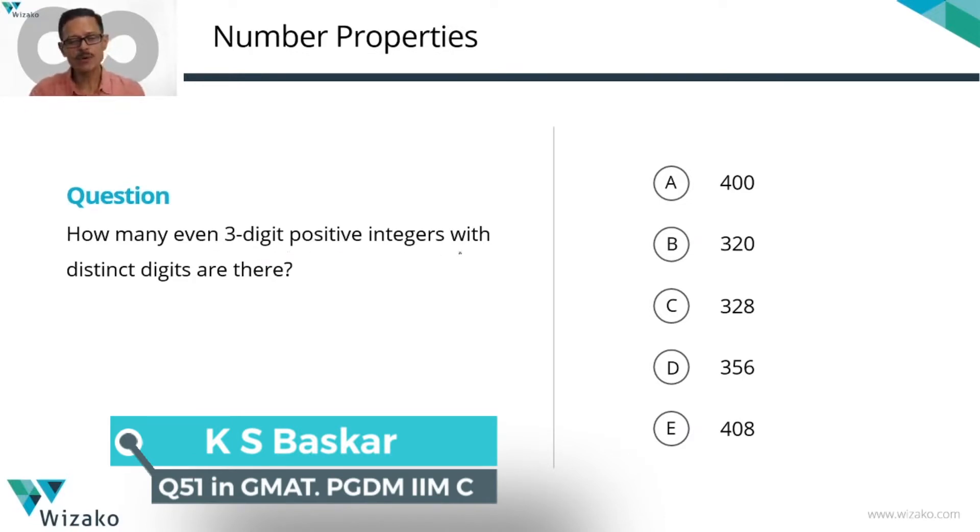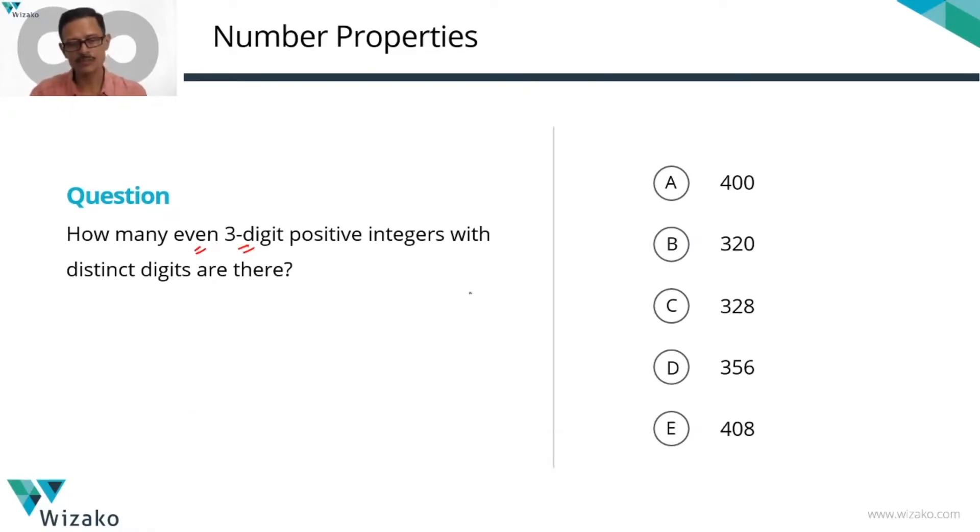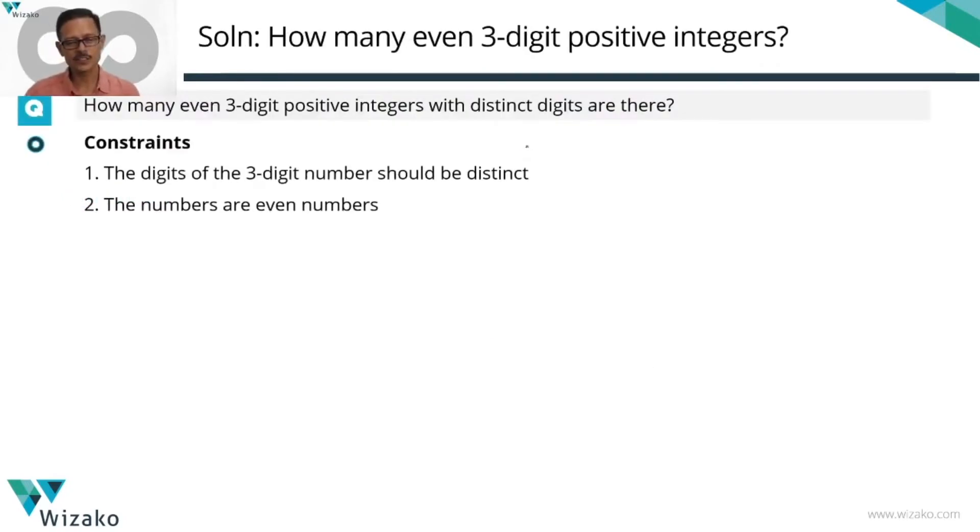How many even three-digit positive integers with distinct digits are there? We're looking at three-digit positive integers, even numbers, and we need these numbers to have distinct digits. Something like 456 will satisfy this condition. It's a three-digit number, it's an even number, and all digits are distinct. So how many such numbers exist is what this question is. These are the two constraints to keep in mind.